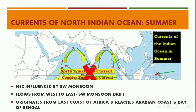During the summer season there is high influence of the southwest monsoon, and hence the North Equatorial Current is influenced by the southwest monsoon and flows from west to east. This is termed as the Southwest Monsoon Drift. These currents originate near the eastern coast of Africa and move along the coast of the Arabian Sea to reach the Bay of Bengal.